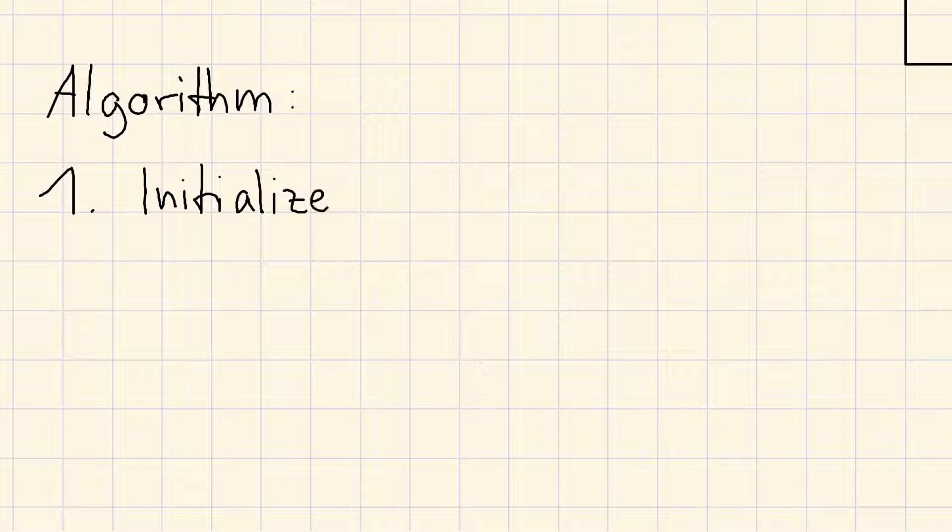The steps would be the following. First, we initialize our µk. We could pick two random data points from within the dataset or pick another initialization method, which will be discussed later.